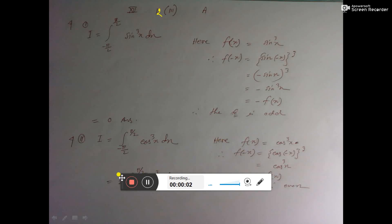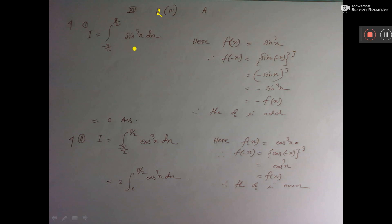Prove that this is equal to 0, this is equal to 0, we have to show. So I have considered i equal to this thing.